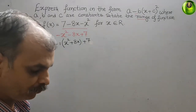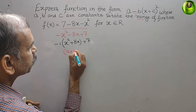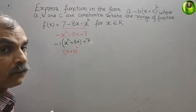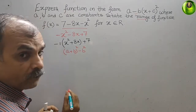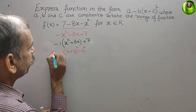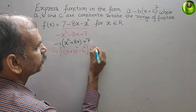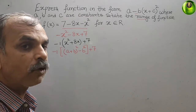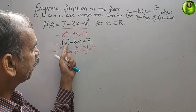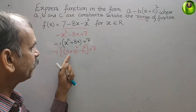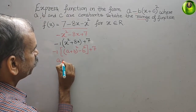Now we convert this into the form (a plus b) whole square, which equals a plus b whole square minus b squared. Here we write minus 1 and take a big bracket, keeping plus 7 outside. To find a: comparing with x squared, we get a squared, so a is equal to x.